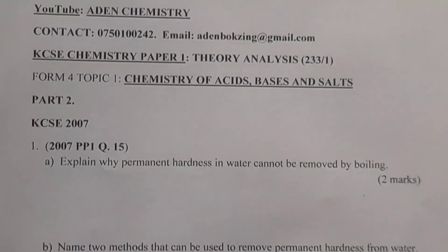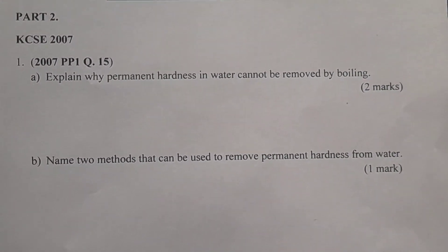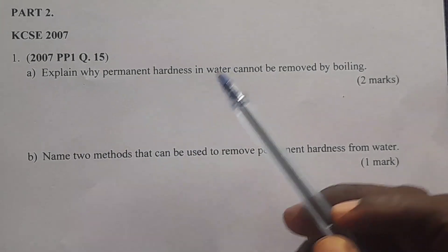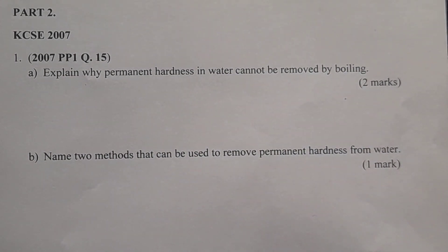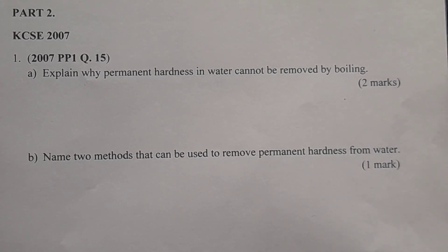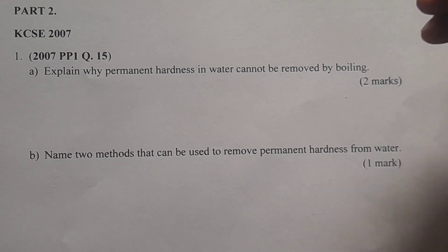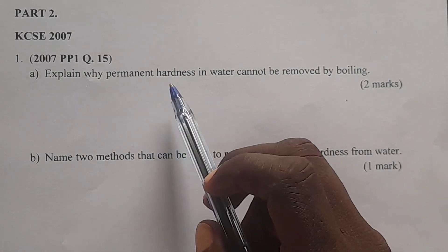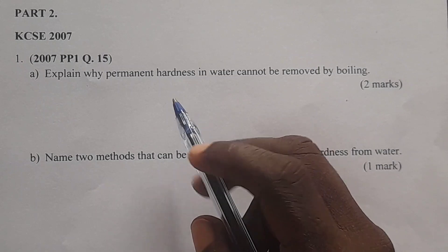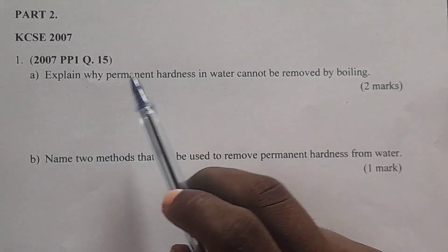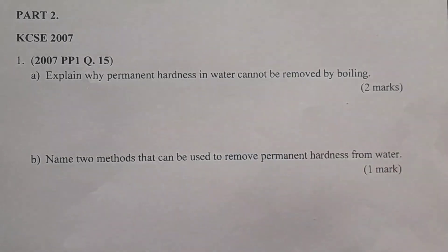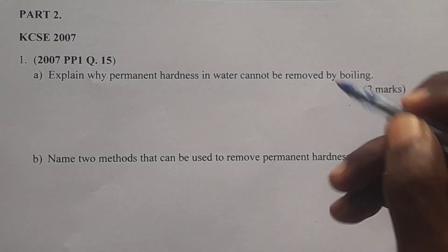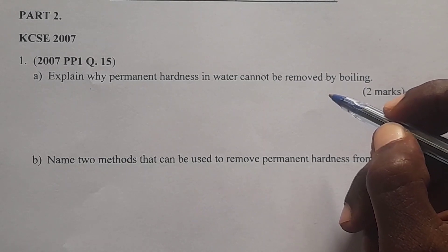So question 1, we have borrowed from KCC 2007, it was in paper 1, question number 15. Part A of the question: explain why permanent hardness in water cannot be removed by boiling. If we go back to water hardness, we were having two types — temporary hardness and permanent hardness. For us to explain this, we have to know first of all the compounds that are responsible for permanent hardness.